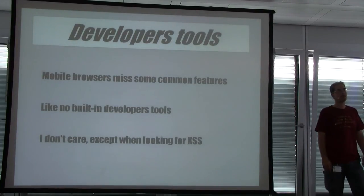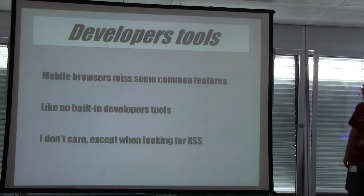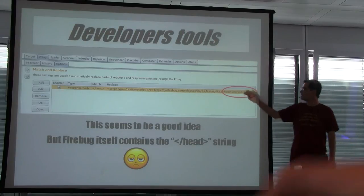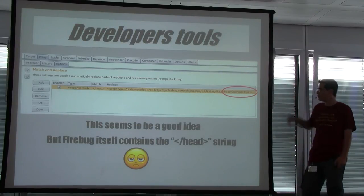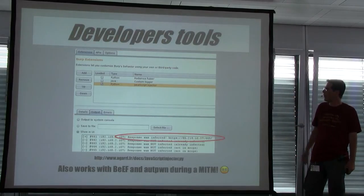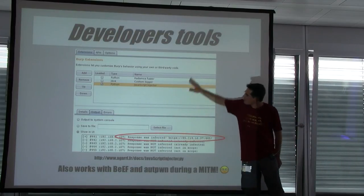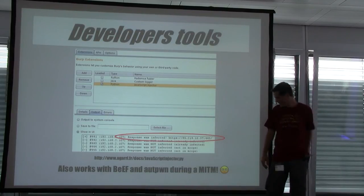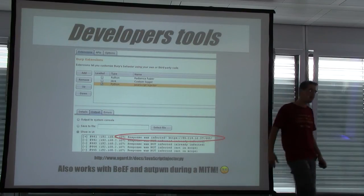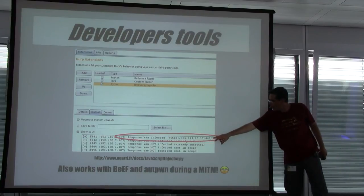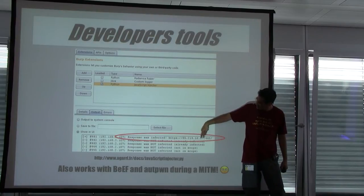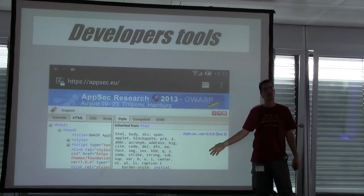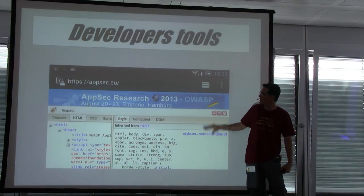Some browsers are missing common features like developer tools — for example, an iPad. Firebug Lite is a JavaScript implementation of Firebug. Using a JavaScript Injector extension I wrote, you can insert a call to Firebug Lite into each response to get the debugging tool in your browser. It also works with BeEF, the XSS framework, for man-in-the-middle scenarios. As a demo: the OWASP AppSec website was 'infected' from my client's point of view, and I got the DOM processing debugging tool directly in the mobile browser.